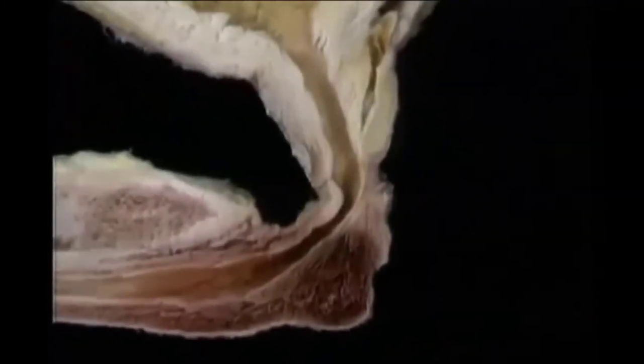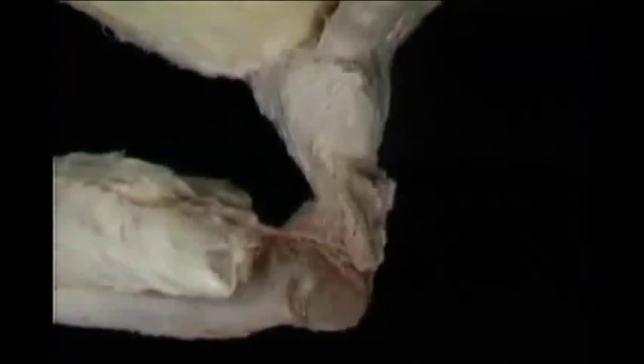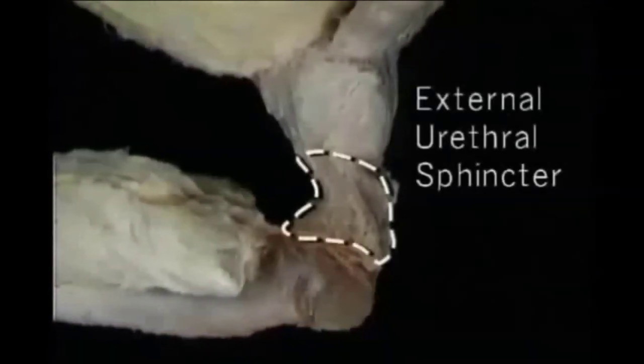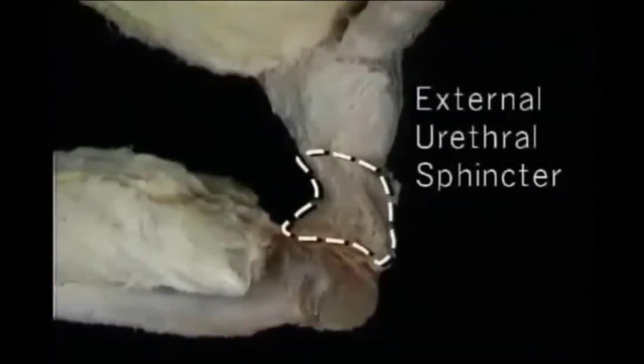The membranous urethra is surrounded by a sleeve of striated muscle, the external urethral sphincter, which exerts voluntary control on the passage of urine.